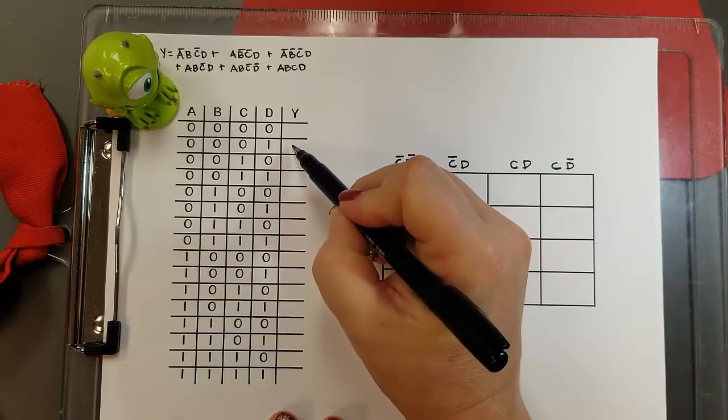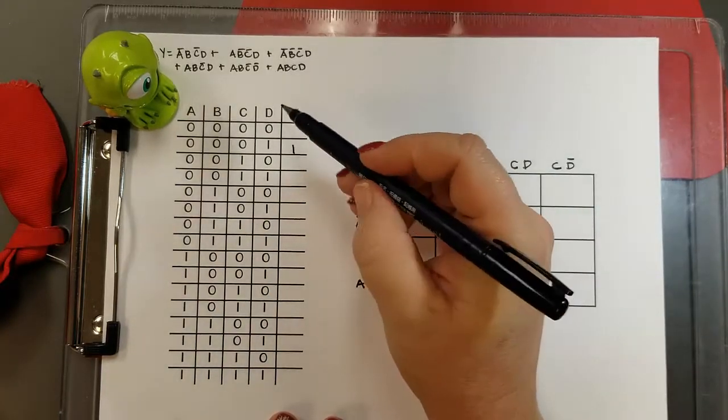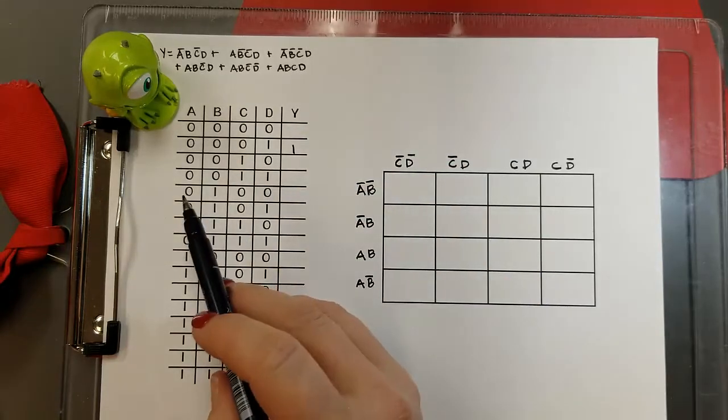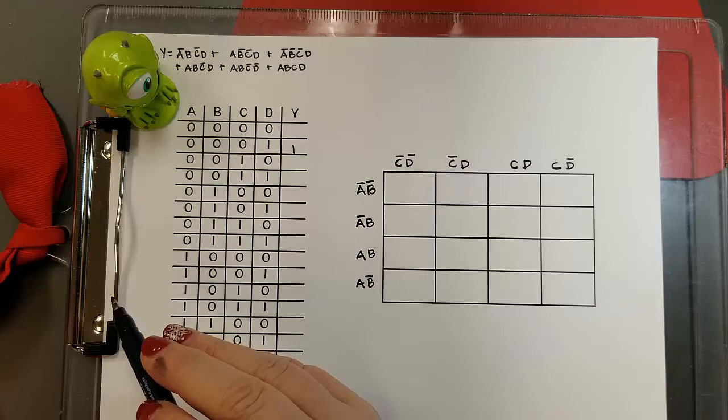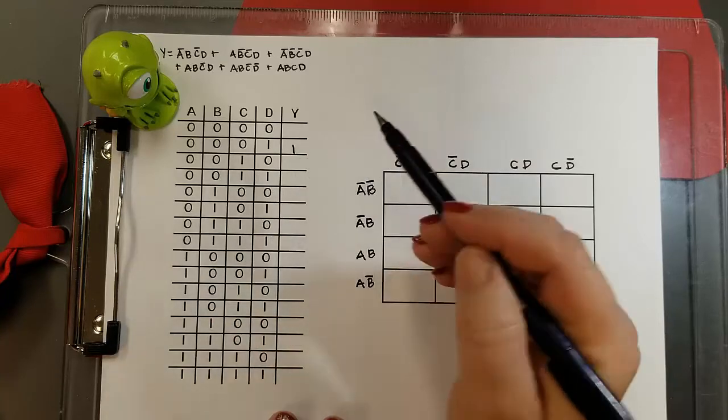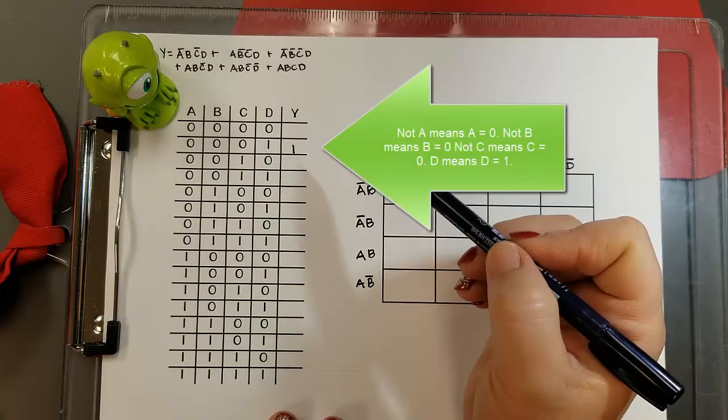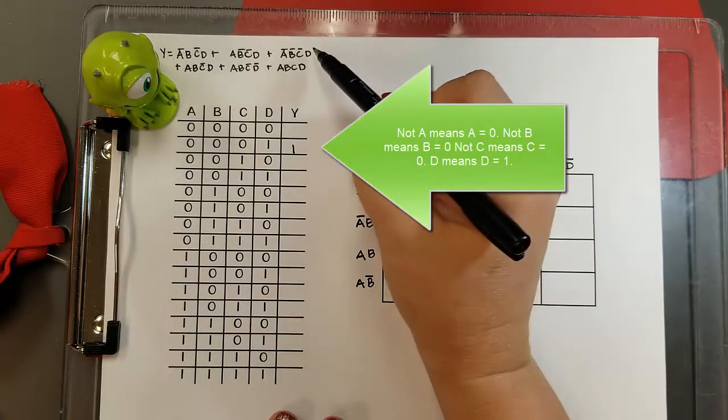I begin to put 1s, and the first term I marked is actually the third term in my expression there. It's not A, not B, not C, D, right? Because that's A equals 0, B equals 0, C equals 0, and D equals 1. So I put a 1 for Y.